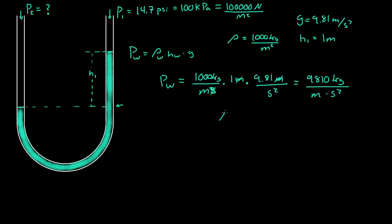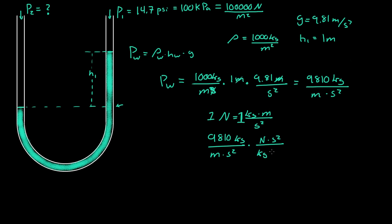Because a newton is equal to one kilogram meter per second squared. So if we substitute that in: 9,810 kilograms per meter second squared, times one newton divided by one kilogram meter per second squared - the kilograms cancel, the seconds squared cancel - and we end up with 9,810 newtons per meter squared. A newton is a force, and meter squared is an area, so force per area is a pressure.